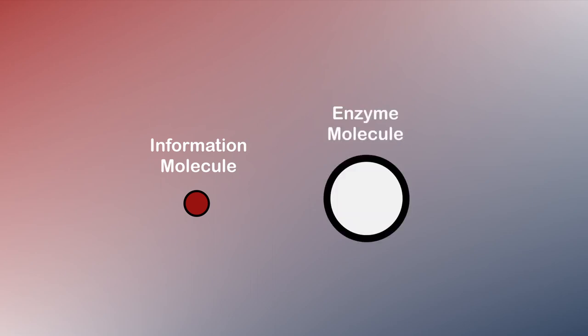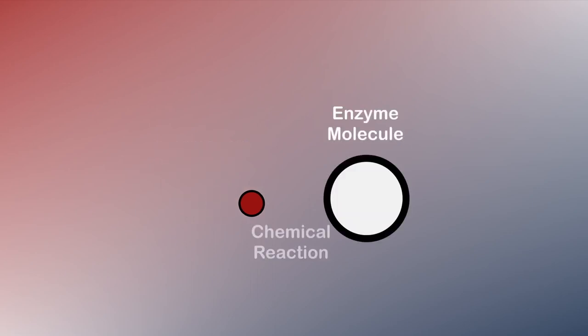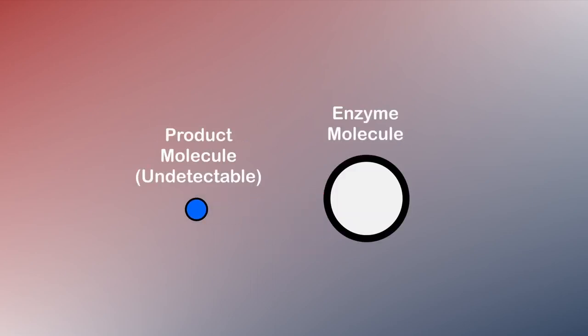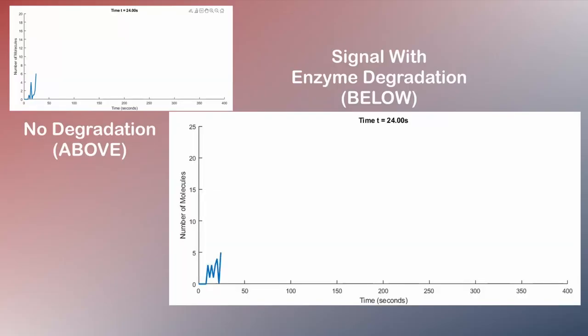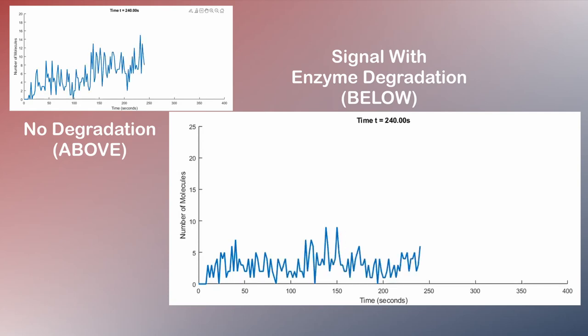It turns out there are biochemical processes that break down molecules to make them easier to detect. If the breakdown process is at the right speed, then you can accelerate the decay of a pulse without destroying the whole pulse. The right enzyme molecule for your signal, present at the right concentration, can make this happen.